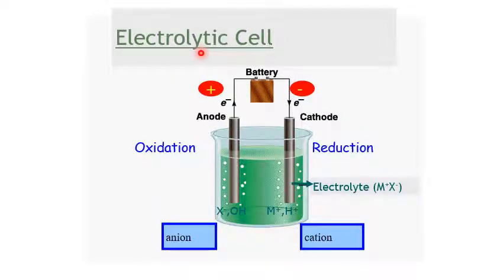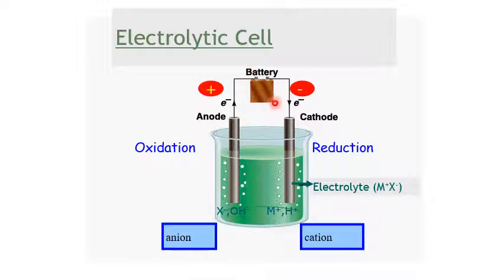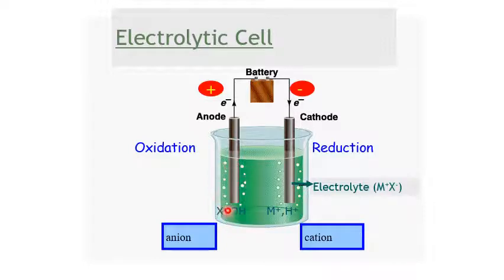Before we start, let me briefly explain what an electrolytic cell is compared to the galvanic cell. In an electrolytic cell, there are electrodes: anode and cathode. Electrons flow from anode to cathode. There is a battery, and the anode is the positive terminal while the cathode is the negative terminal. The anode undergoes oxidation, cathode undergoes reduction. Anions move to the positive terminal (anode) and cations go to the cathode. Only one electrolyte is used.